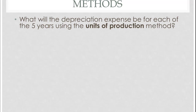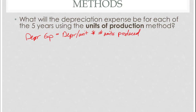Depreciation expense under units of production is going to be the depreciation per unit times the number of units produced. You can think about this as the number of miles that you drive, or the number of pieces that actually come off of an assembly line. Depreciation per unit is going to be our depreciation base divided by our estimated number of units, and then we multiply that by our units produced.